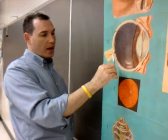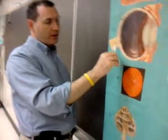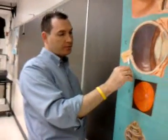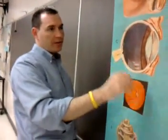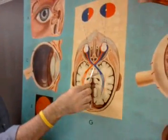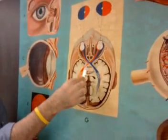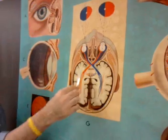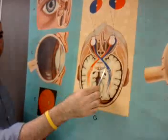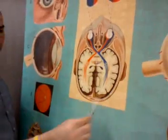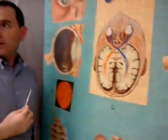Running along with the optic nerve is going to be the artery and the vein. The optic nerves are going to project down to the optic chiasm, back to the optic tracts, to the occipital lobe for processing of information.